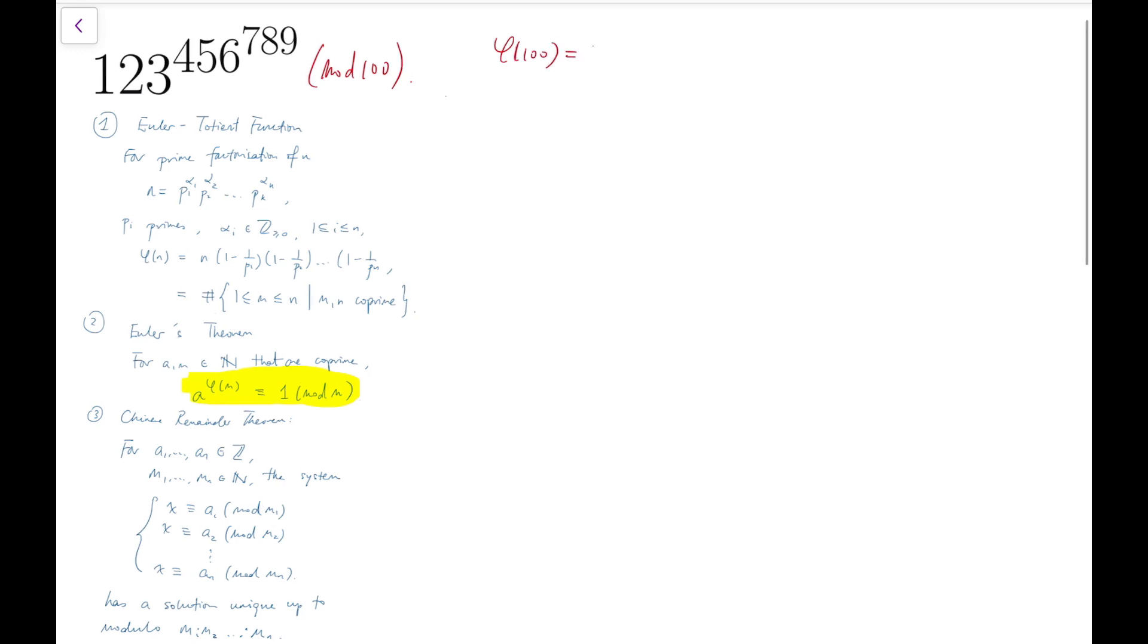φ(100) equals 100 times (1 - 1/2) times (1 - 1/5), because 2 and 5 are the only prime factors of 100, and this gives 40. So we know that for any number a that is coprime to 100, this number to the power of 40 is congruent to 1 mod 100, and that's because of Euler's theorem.